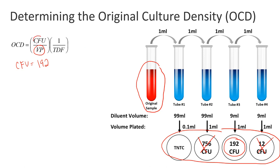That takes care of that number. For the volume plated: now that we've determined which plate we're going to use, we can see that one milliliter from tube number three was plated onto the plate that resulted in 192 colonies. That tells us our volume plated is one milliliter. There's only one thing left to find to calculate the OCD, and that is the total dilution factor.